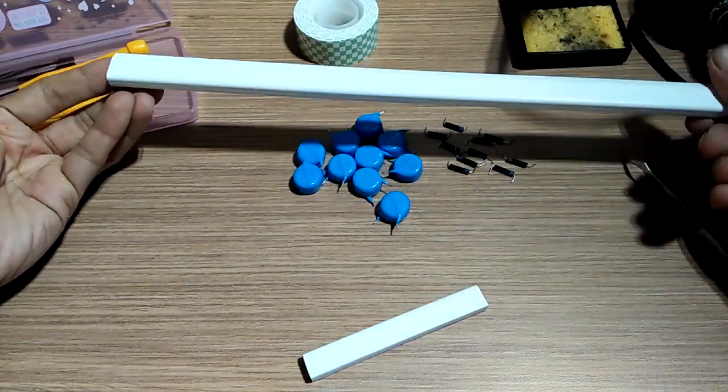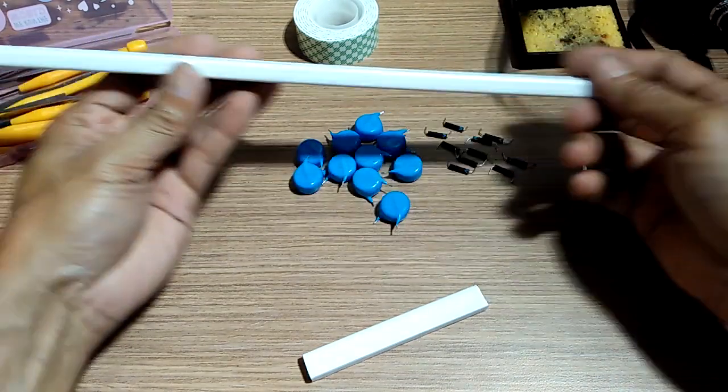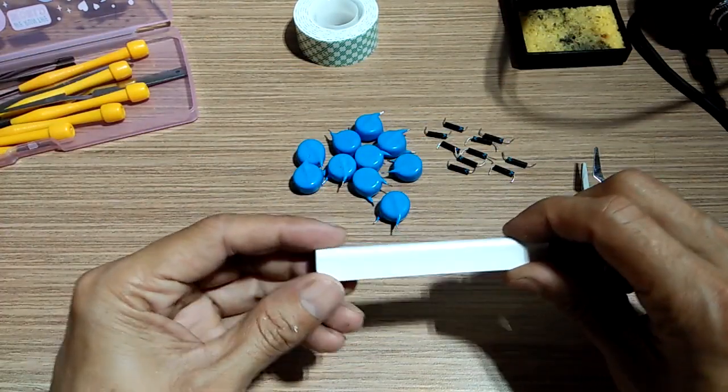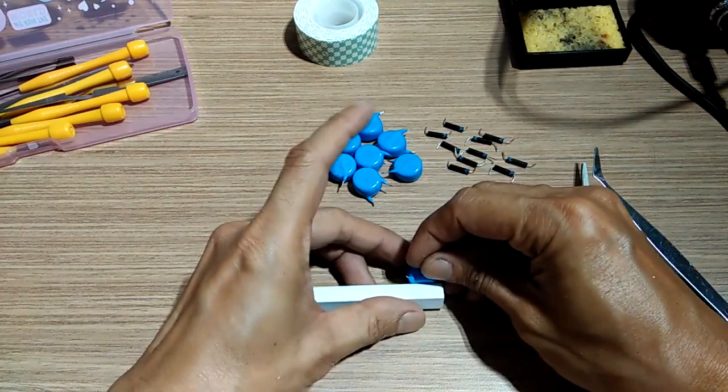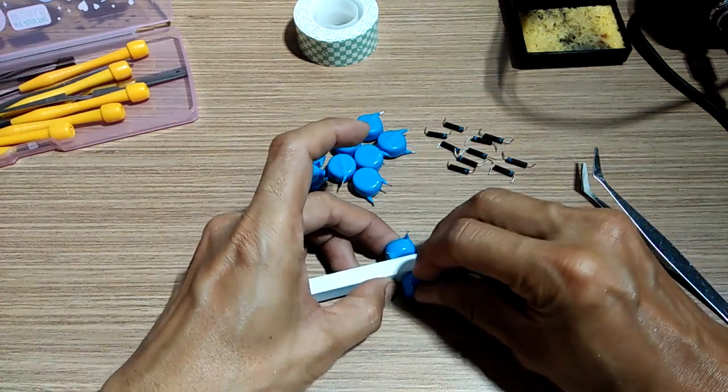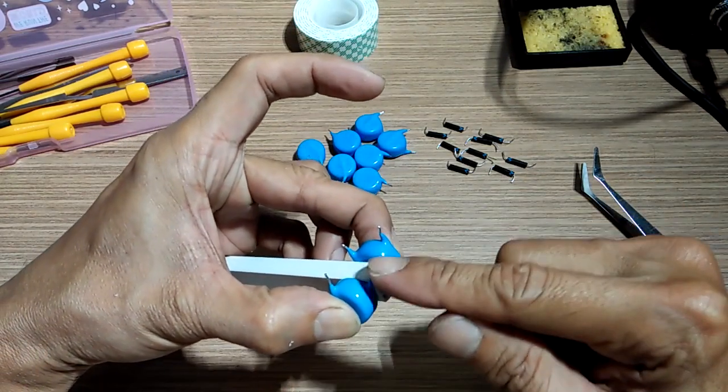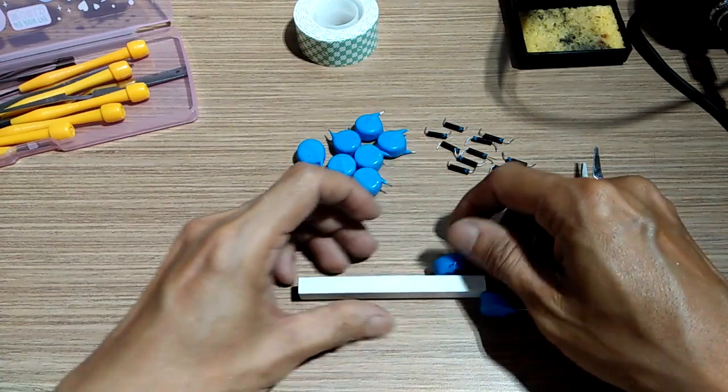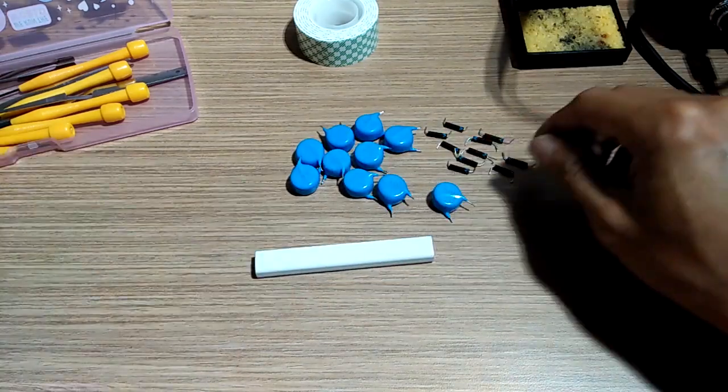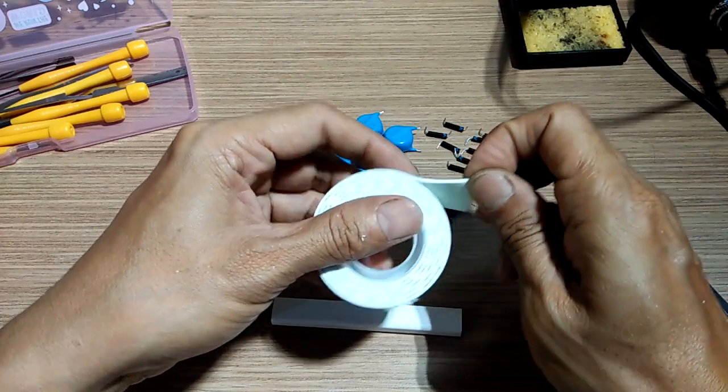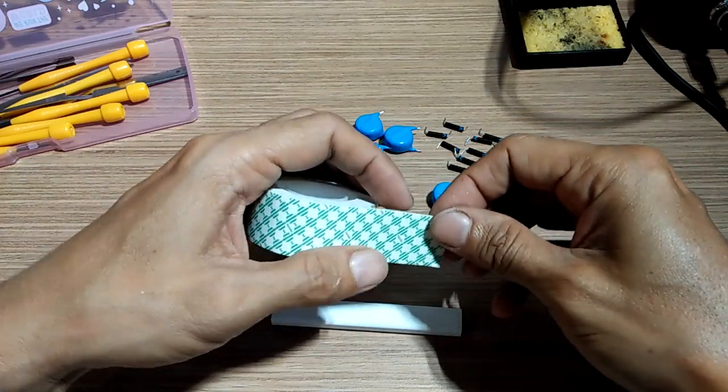To assemble the high voltage cascade, I used this piece of plastic that I got from the refrigerator. It will serve as the spacer between the capacitors and a backbone of my high voltage cascade. I used double-sided tape to attach the capacitors, making it easier to solder them together.